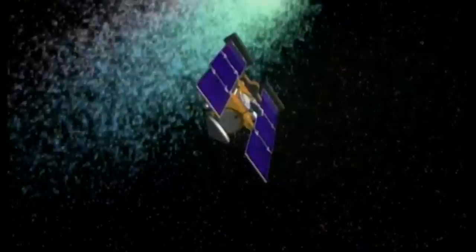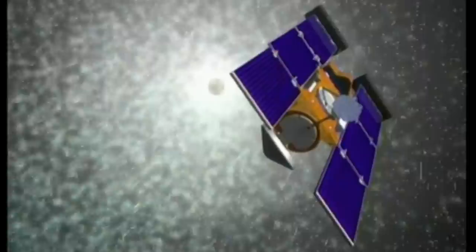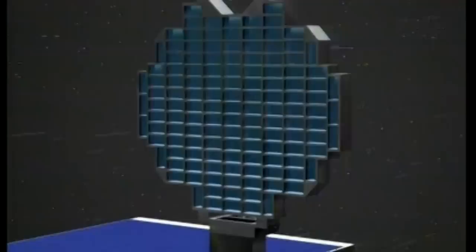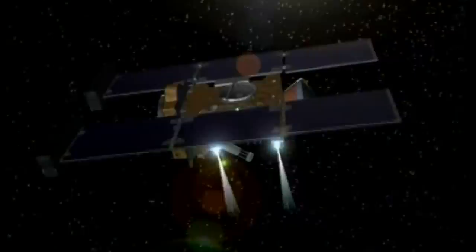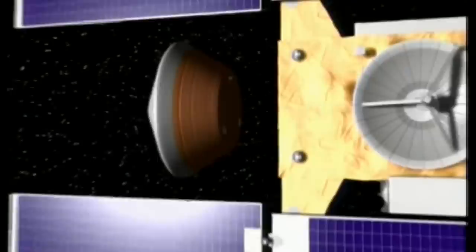La sonde spatiale Stardust part à la rencontre de la comète Wild 2. A la manière du papier du mouche, ces instruments vont collecter des échantillons pendant que Stardust traversera sa chevelure. Mais à la différence de Giotto, qui n'a fait que nos envoyés nous donner, Stardust, elle, doit ramener sur Terre sa précieuse récolte.